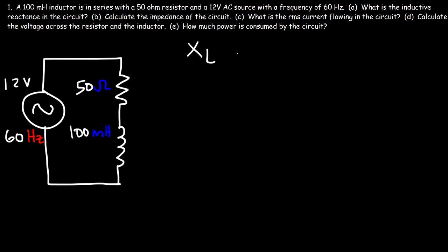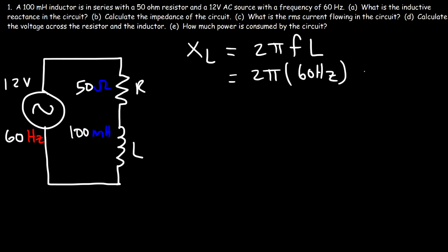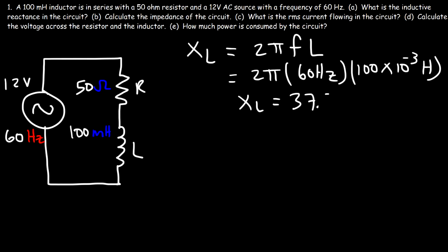The inductive reactance tells us how much the inductor opposes an AC signal. It's equal to 2πFL, where F is the frequency and L is the inductance. The frequency in this example is 60 Hertz and the inductance is 100 millihenrys, or 100 × 10⁻³ henrys. Milli is 10⁻³ and micro is 10⁻⁶. So the inductive reactance is 37.7 ohms.